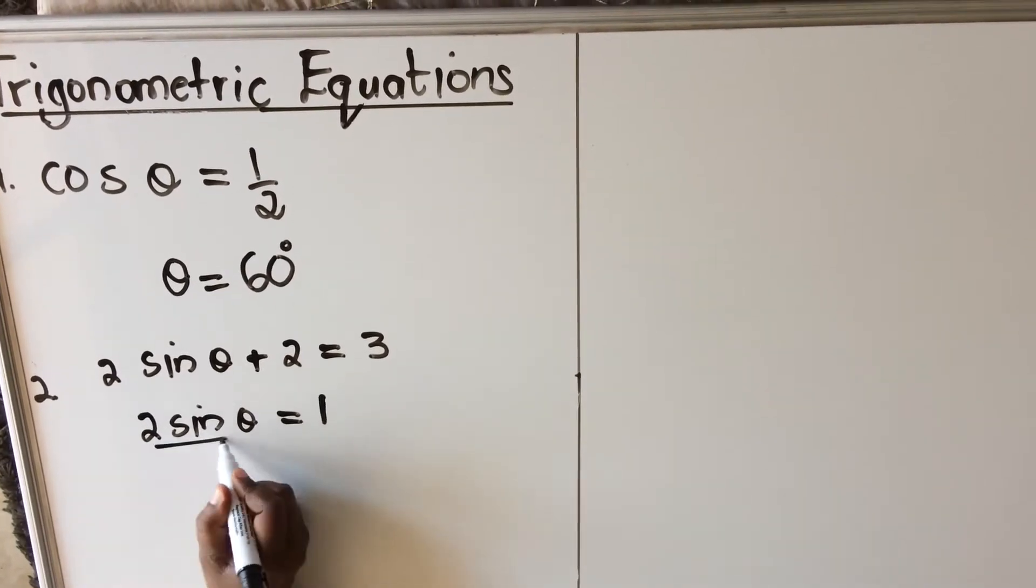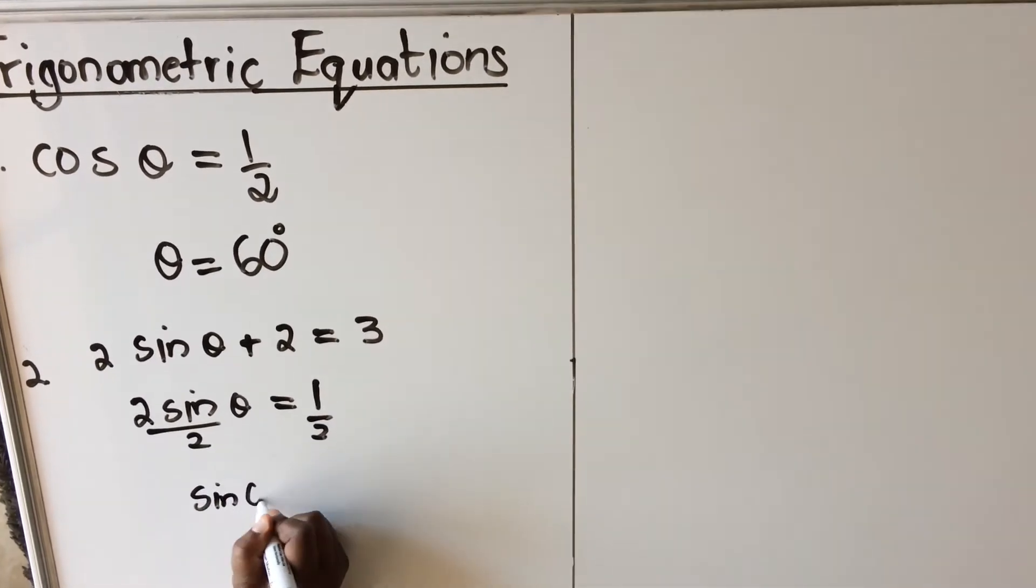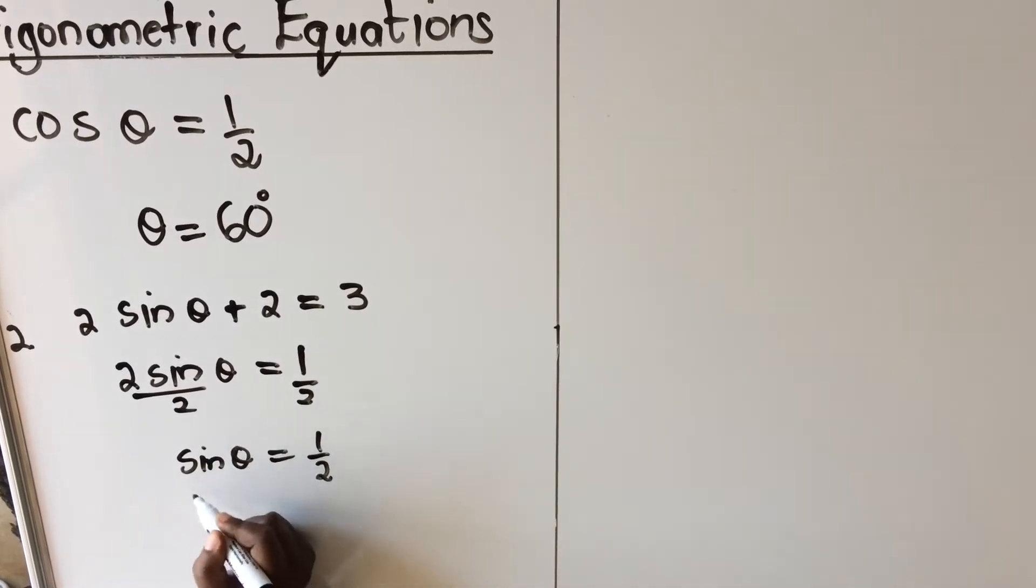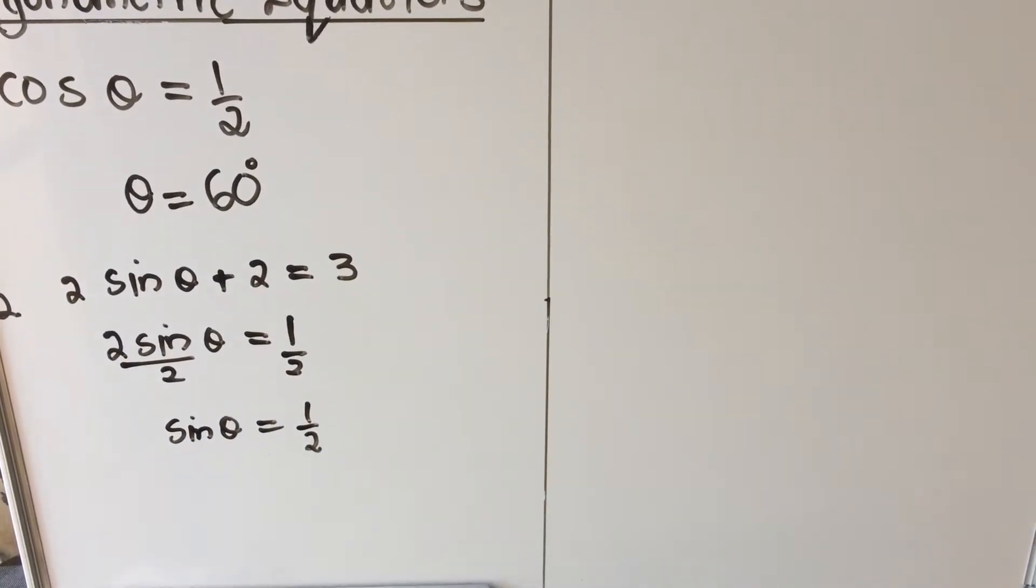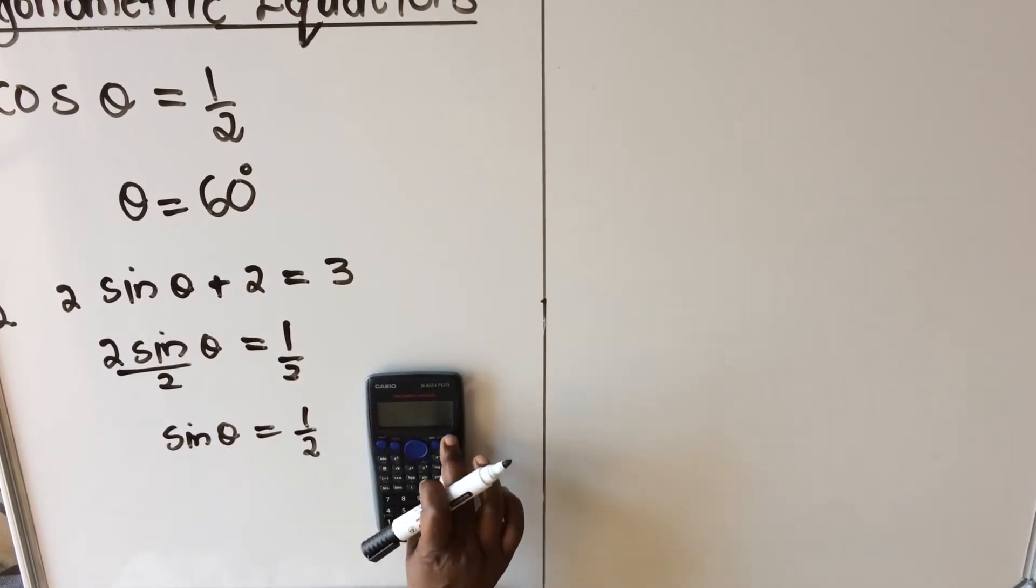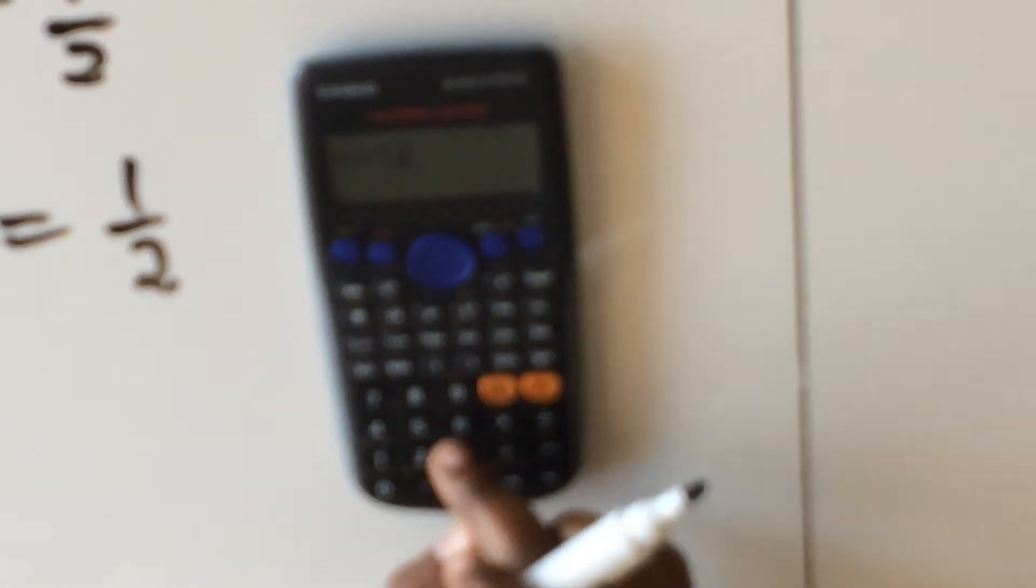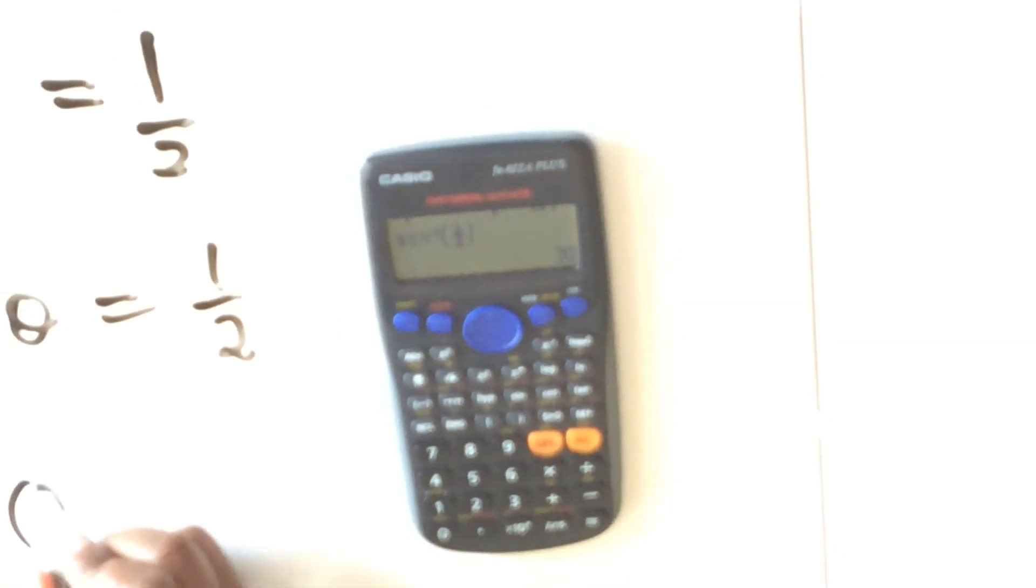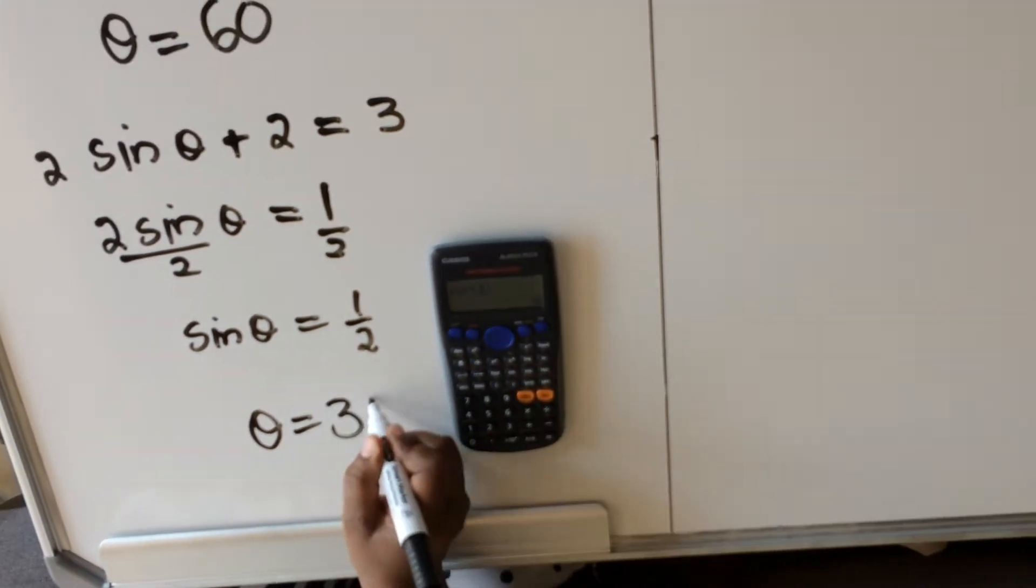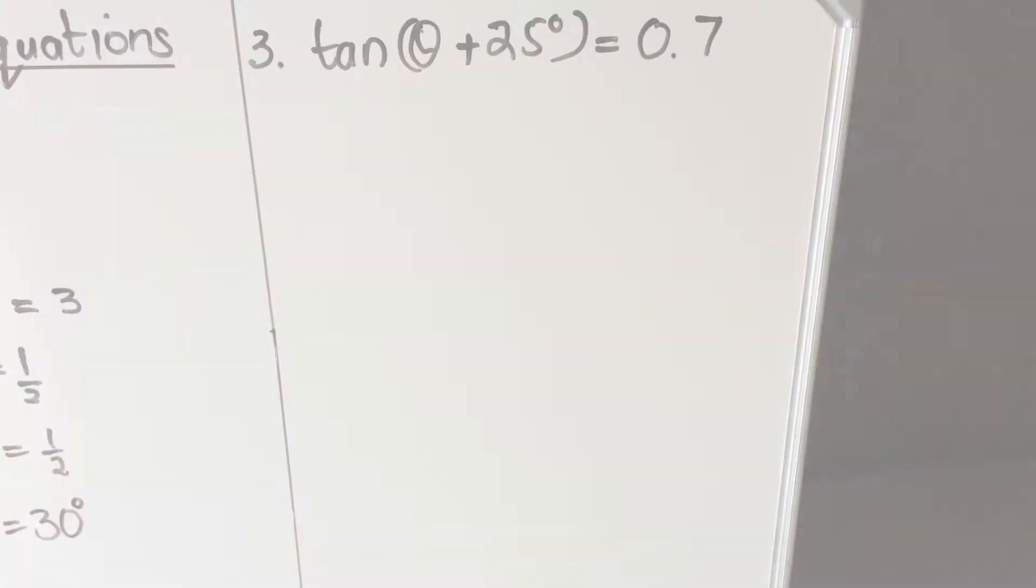Next, get rid of the two by dividing both sides by two. Then you have sin theta equals half. When you have the trig ratio all by itself, we use our calculator to divide for us. We go shift sin, 1 over 2, then our theta equals 30 degrees. Let's do the third one.